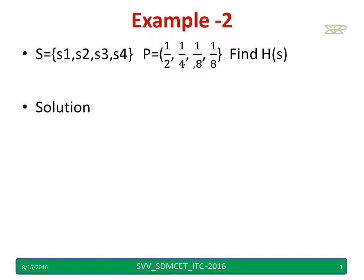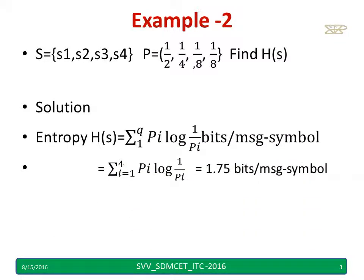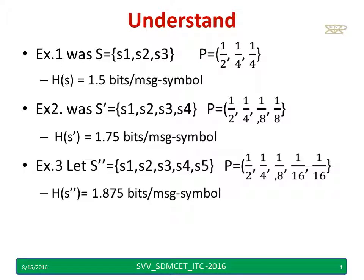Take another example: here I have four symbols and four probabilities. I found the entropy to be 1.75 bits per message symbol. The first example had symbols s1, s2, s3 with probabilities 1/2, 1/4, 1/4, giving entropy 1.5 bits per message symbol.